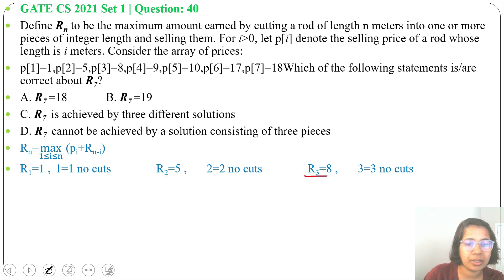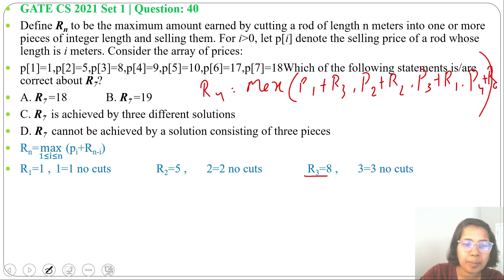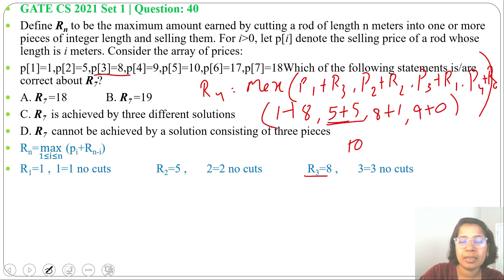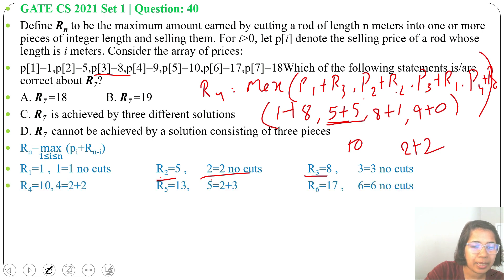Next, R(4) = max of: P(1)+R(3)=1+8=9, P(2)+R(2)=5+5=10, P(3)+R(1)=8+1=9, P(4)+R(0)=9+0=9. The maximum is 10, found by P(2)+R(2). Since R(2)=5 without any cut, R(4)=10 by cutting into 2+2.